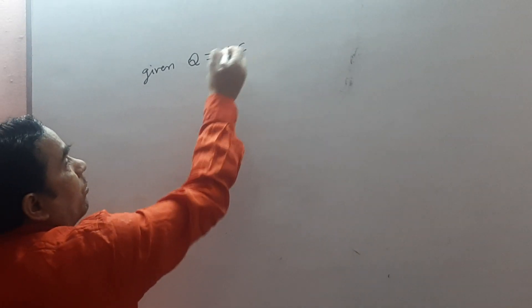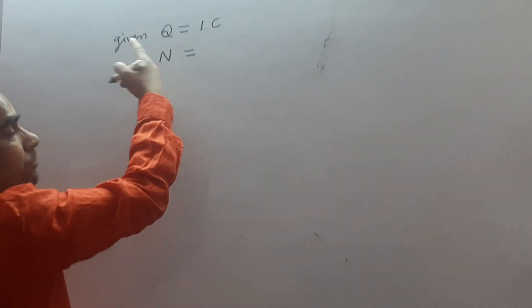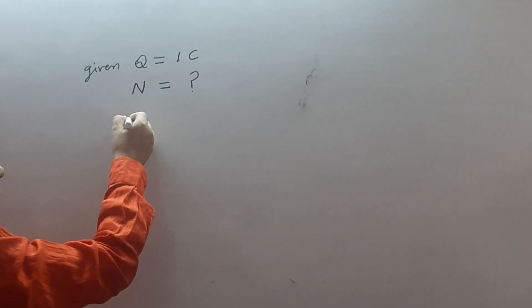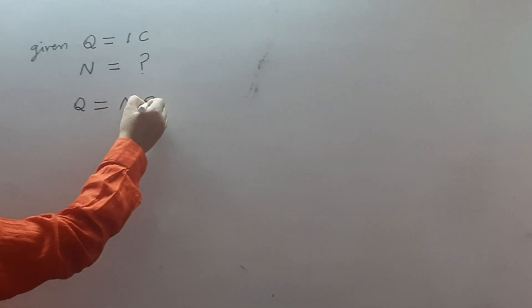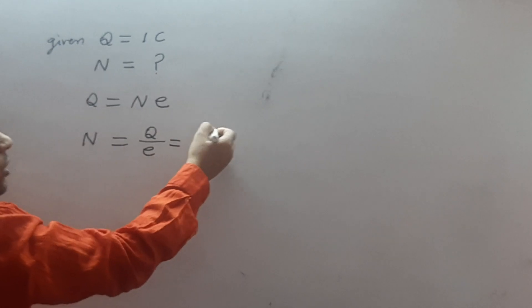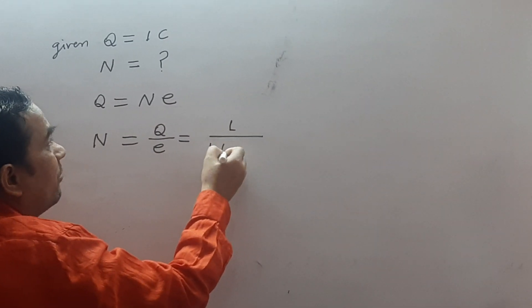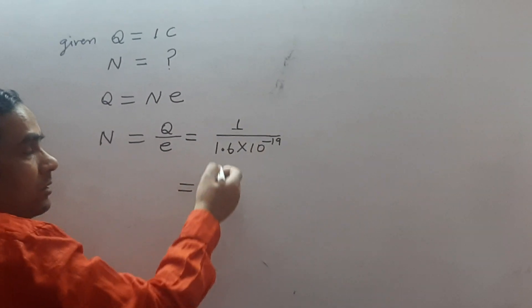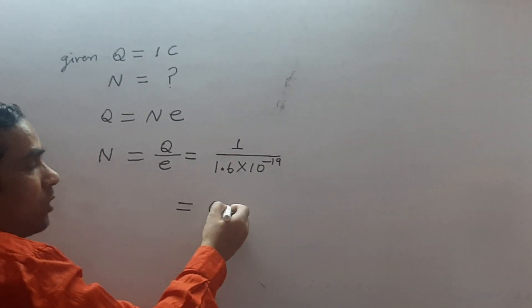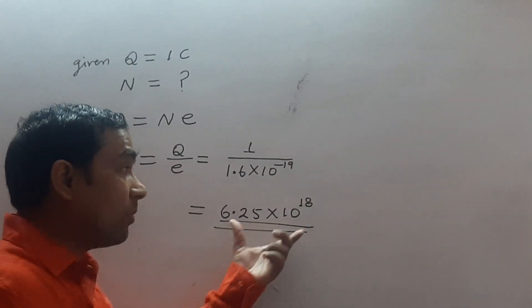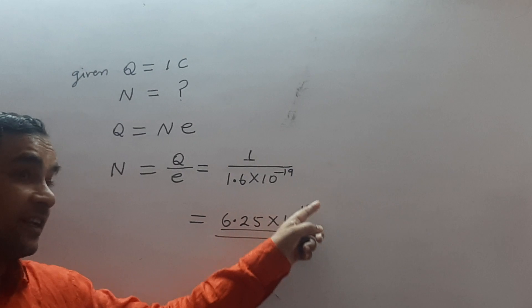You are given charge Q equals 1 Coulomb. Now you have to find out number of electrons in 1 Coulomb charge, N. You know Q equals to NE. So N equals to Q upon E. Q is 1, E is 1.6 into 10 raise to power minus 19. Solve it out. 6.25 into 10 raise to power 18 number of electrons. It is very large number.